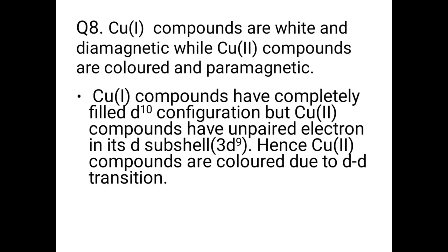Question number 8: Copper(I) compounds are white and diamagnetic while copper(II) compounds are coloured and paramagnetic — why? In copper(I) compounds, the configuration is completely filled 3d¹⁰, but copper(II) compounds have unpaired electrons in the d subshell, i.e., 3d⁹, hence copper(II) compounds are coloured due to d-d transition.